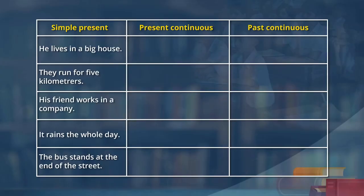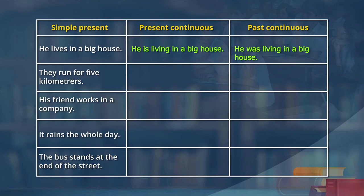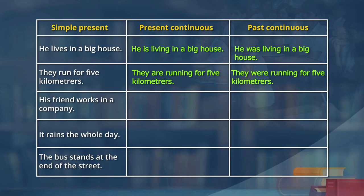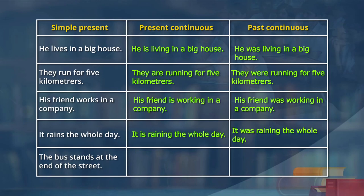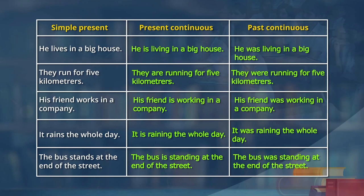Here is a table — I am going to say a sentence in simple present, and you say it in present continuous and past continuous. 'He lives in a big house' → 'He is living in a big house' → 'He was living in a big house.' 'They ran for 5 kilometers' → 'They are running for 5 kilometers' → 'They were running for 5 kilometers.' 'His friend works in a company' → 'His friend is working in a company' → 'His friend was working in a company.' 'It rains the whole day' → 'It is raining the whole day' → 'It was raining the whole day.' 'The bus stands at the end of the street' → 'The bus is standing at the end of the street' → 'The bus was standing at the end of the street.'